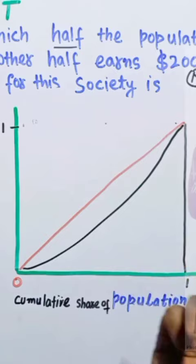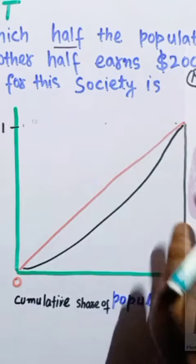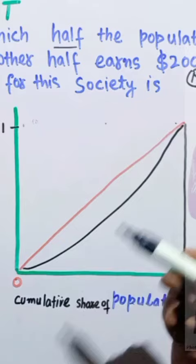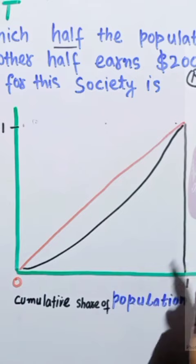This red line shows us the line of perfect equality. By line of perfect equality, what we mean is that every percent of population owns the same percent of income. If you're getting confused, let me explain it here.